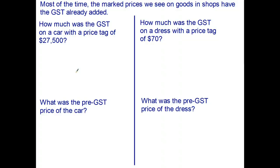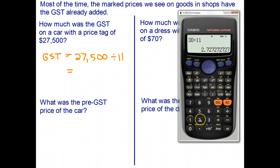Okay, let's see how you went. We've got a car that has a price tag of $27,500. The GST is one-eleventh of that. To work out what the GST is, we just go $27,500 divided by 11—27500 divided by 11—and GST on this particular car was $2,500.